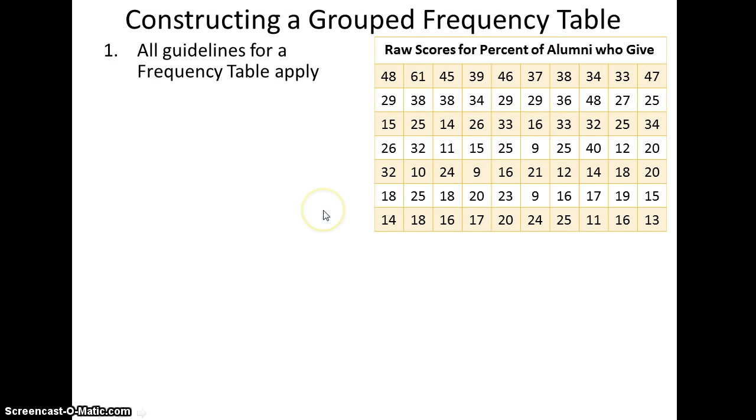The first thing you need to know about the grouped frequency table is that all guidelines for frequency table that we just reviewed still apply. But you might see, this is kind of an unwieldy amount of data. This is actually 70 scores that are the percent of alumni who give to their alma maters for 70 top universities. In this case, it would be possibly really unwieldy to have a frequency table, so we'd like to construct a group frequency table.